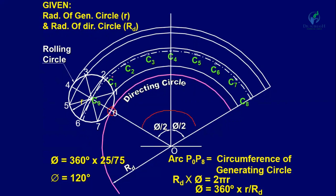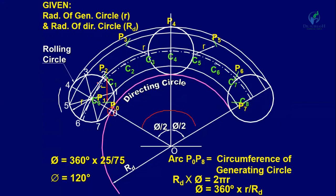Draw arcs with C1 as center and radius 25 mm — it intersects the circle passing from point 1 at P1. The initial point P0 is at the starting position. Similarly, with C2 as center find P2, with C3 find P3, and continue through C8 to find P4 through P8. Join all these points by a smooth curve — this curve is known as an epicycloid.